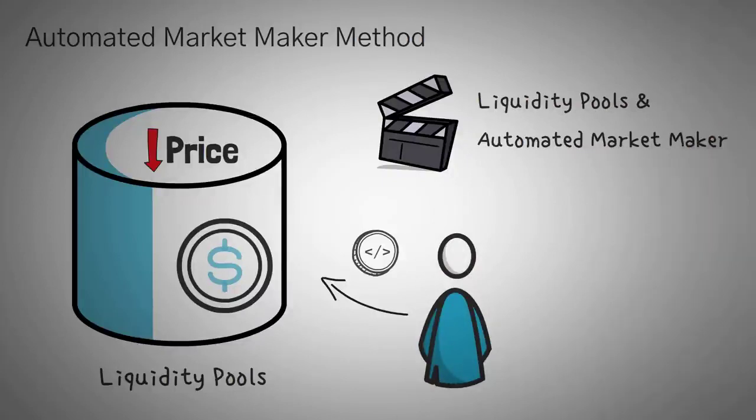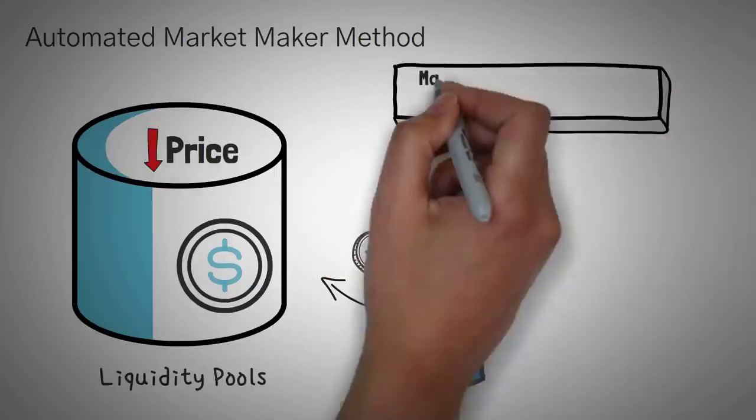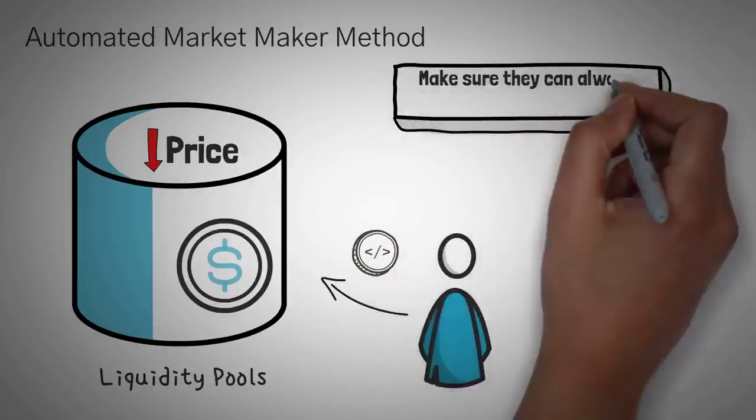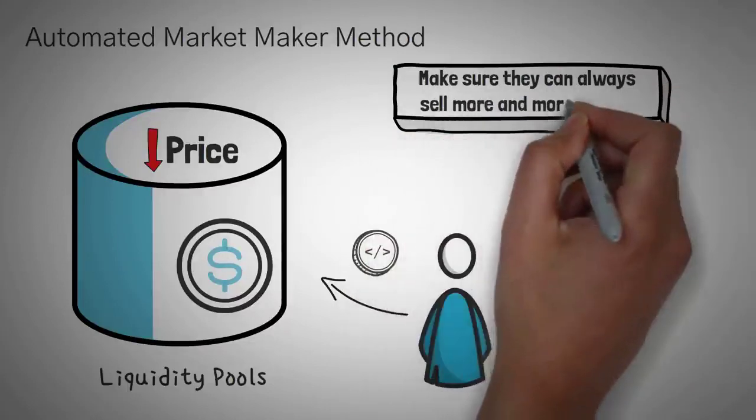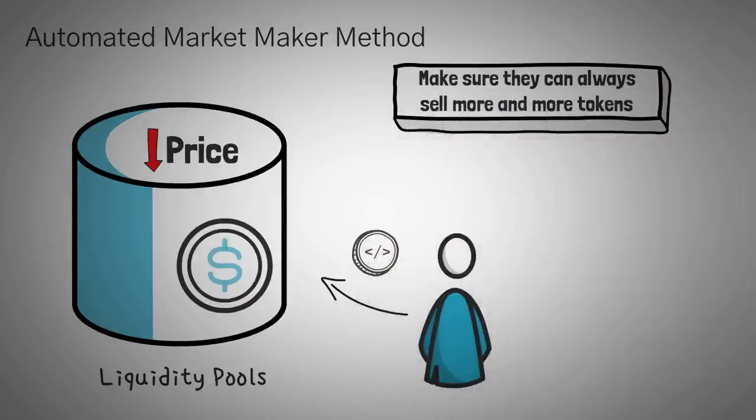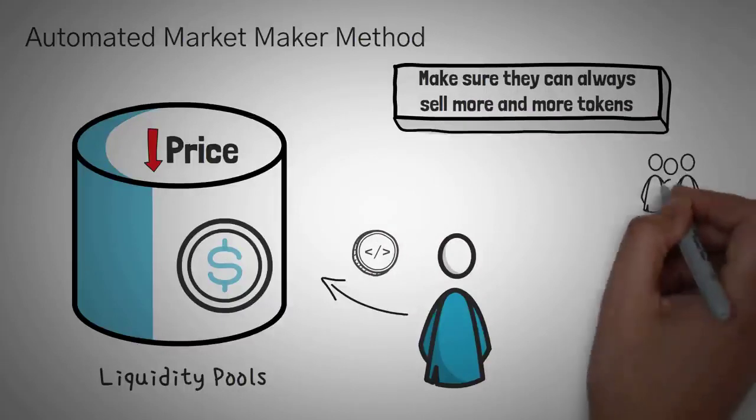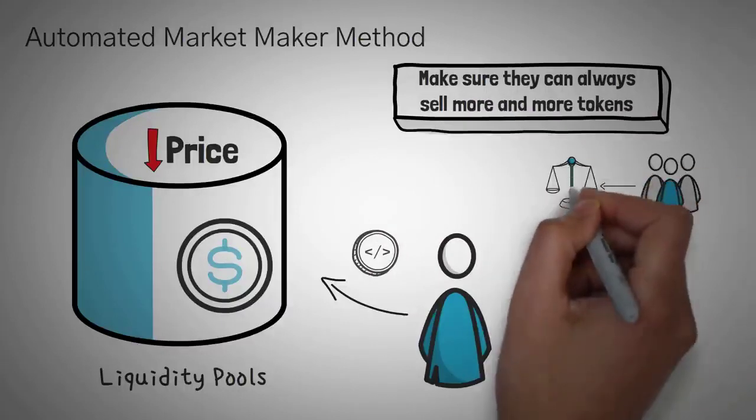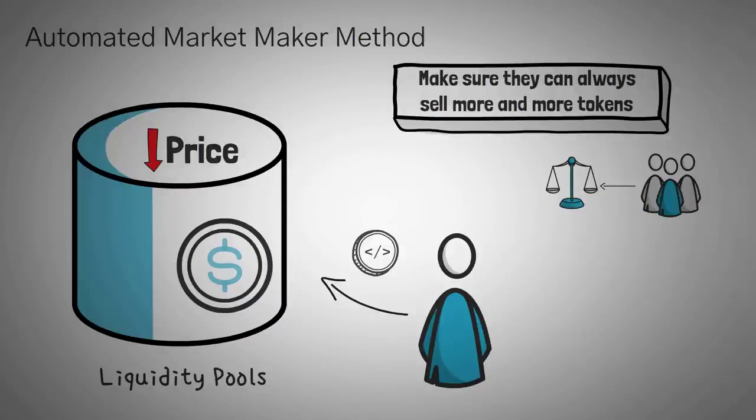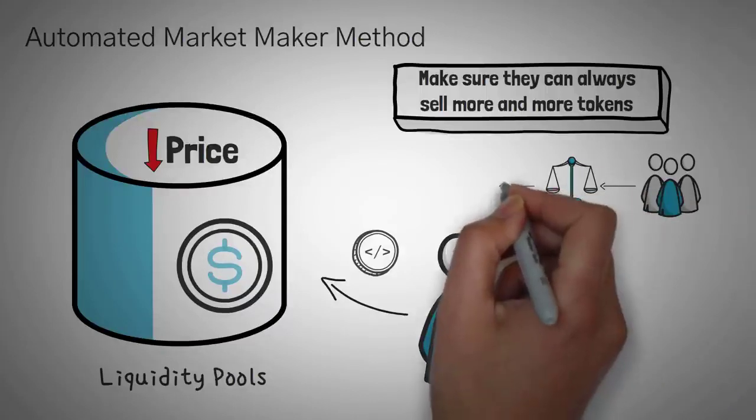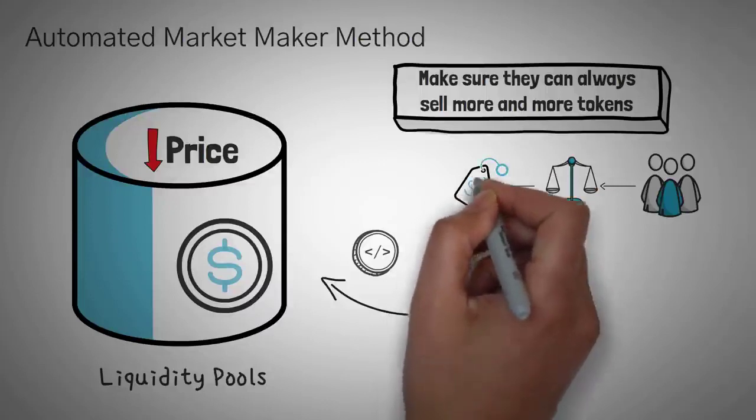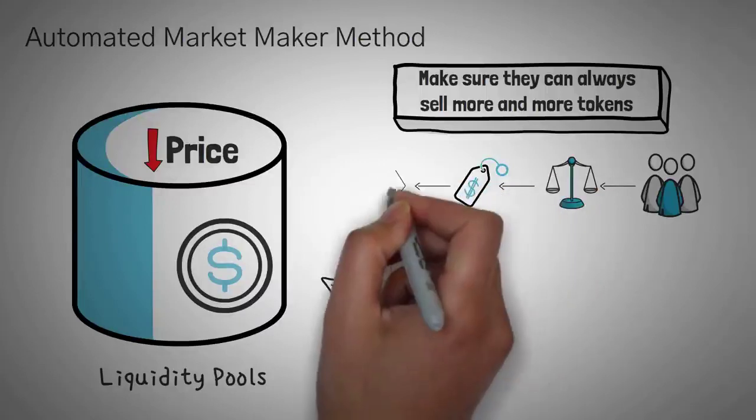Our liquidity pool video explains how investors can make money, and our AMM video explains exactly how the algorithm works. Now, these algorithms use a special formula to make sure that they can always sell more and more tokens, even if they have barely any left. The less they have, the more they charge. This incentivizes some traders to come along and balance the pool back out by making a profit off of the opposite trade. These algorithms work amazingly well to set prices and allow traders to trade, which is probably why most DEXs use them.